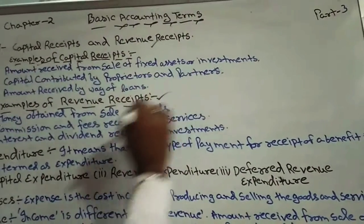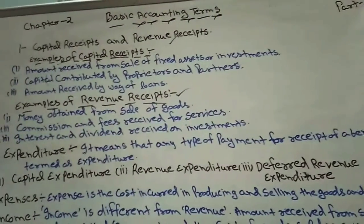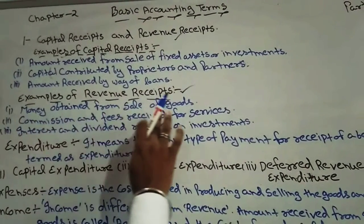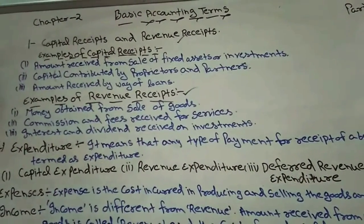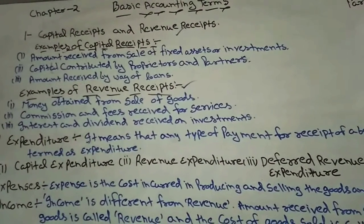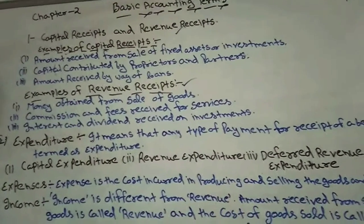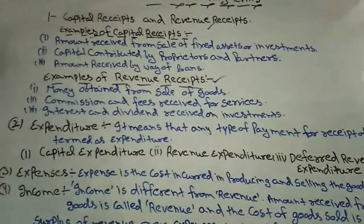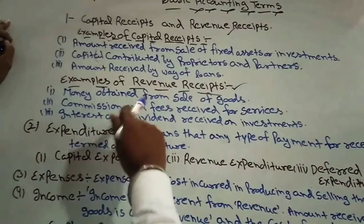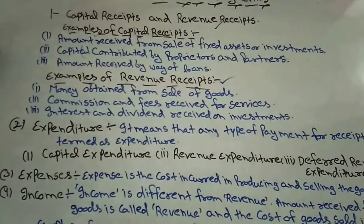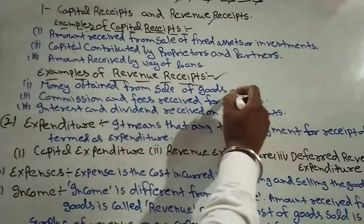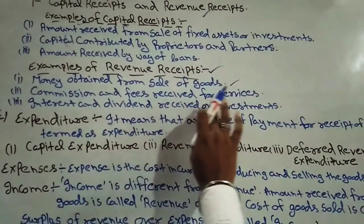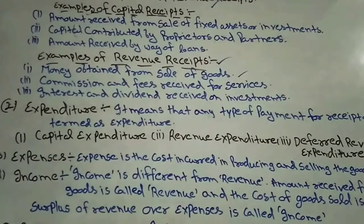Now we talk about revenue receipts. Examples of revenue receipts: the first is money obtained from sales of goods. When we sell anything in the market in the business and earn an amount from it, that is called money obtained from sales of goods, and this is called a revenue receipt.